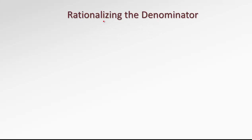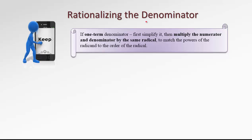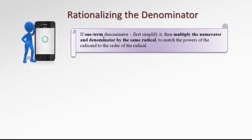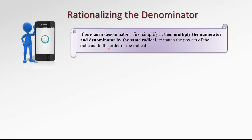In this video, we'll talk about rationalization of denominators. What does it mean to rationalize the denominator? Basically, we want to get rid of all radicals that may appear in the denominator. In case our denominator consists of just one term containing a radical, first we need to simplify it, and then multiply the numerator and denominator by the same radical to match the powers of the radicand to the order of the radical. Let's see how it goes.